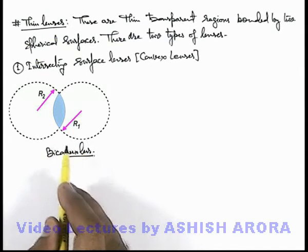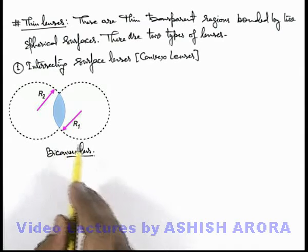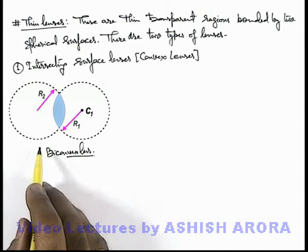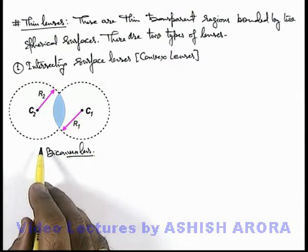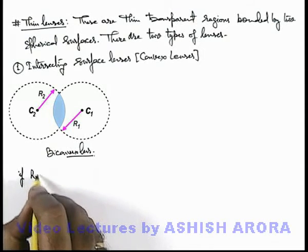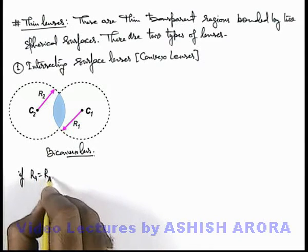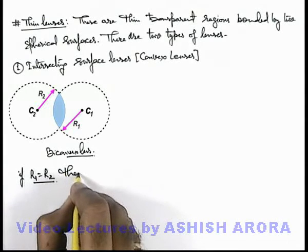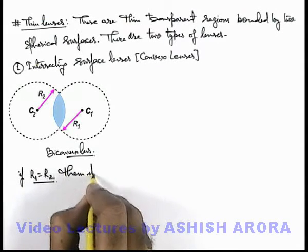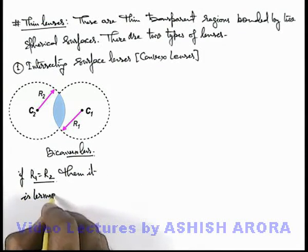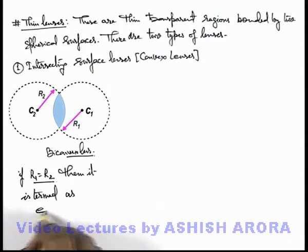For the 1st surface the center is on one side and for the 2nd surface the center is on the other side. Here we can write if r1 is equal to r2, then it is termed as an equiconvex lens.